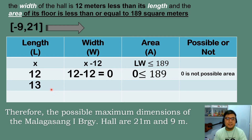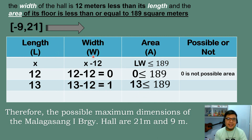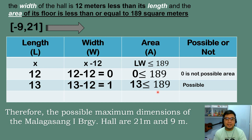Trying positive 13: length equals 13, width equals 13 minus 12 equals 1, and area equals 13 times 1 equals 13, which is less than or equal to 189 — this works. So valid solutions start from x equals 13, and continue through 14, 15, 16, 17, 18, 19, 20, up to 21.